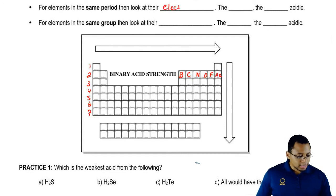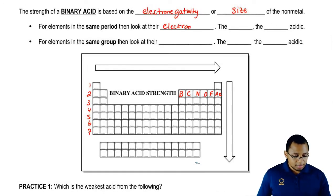So we're going to take a look at their electronegativities in order to determine acidity. And basically, what you're going to say here is the more electronegative the nonmetal, the more acidic.